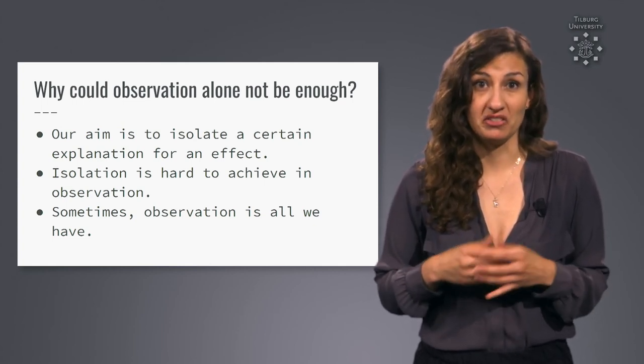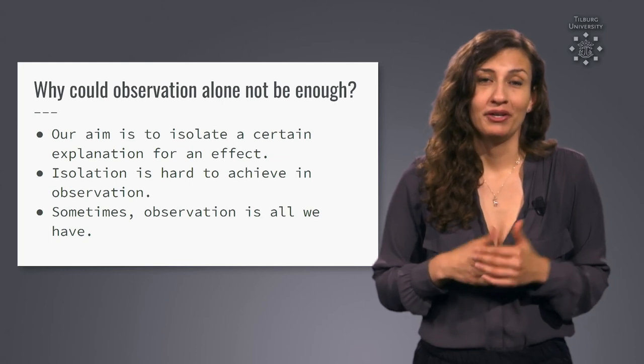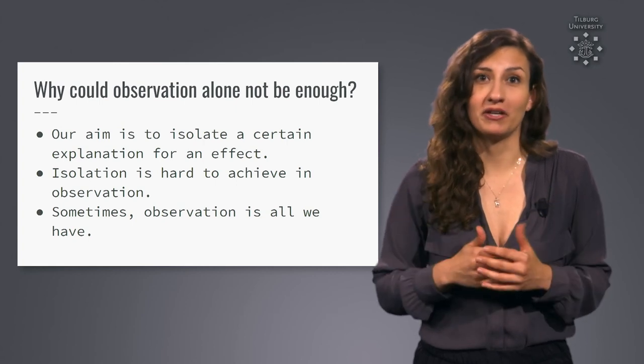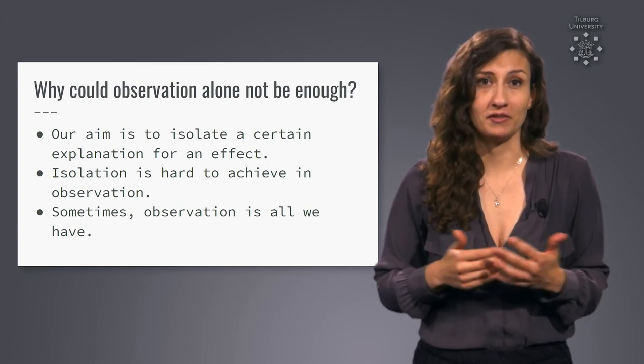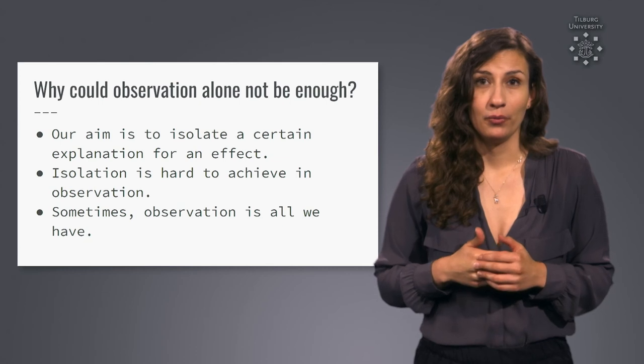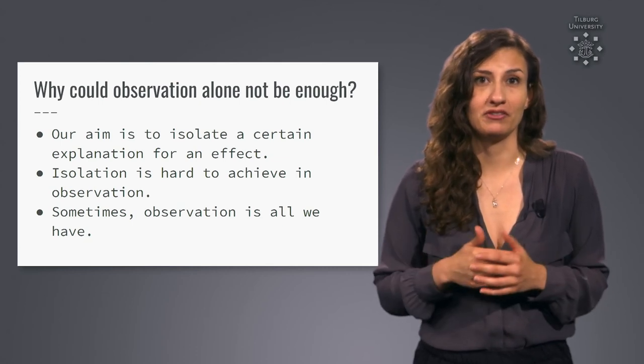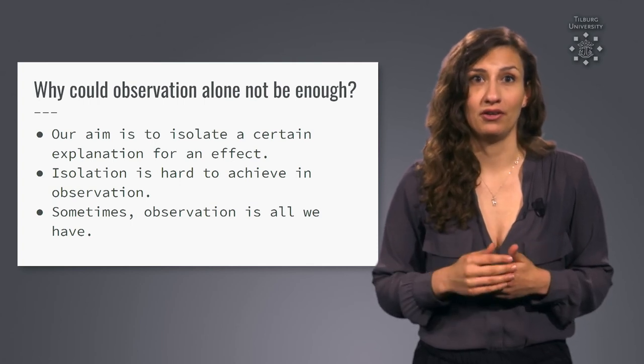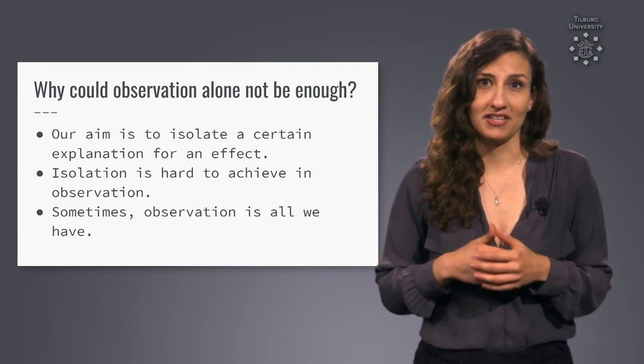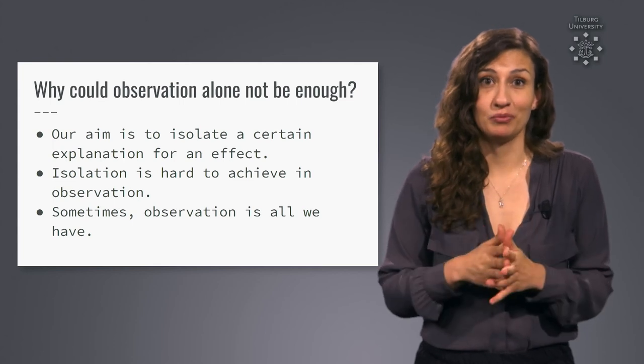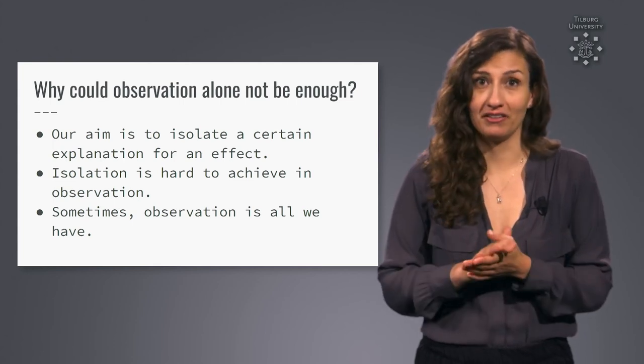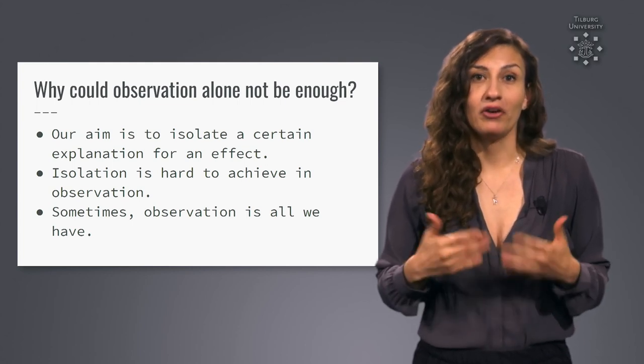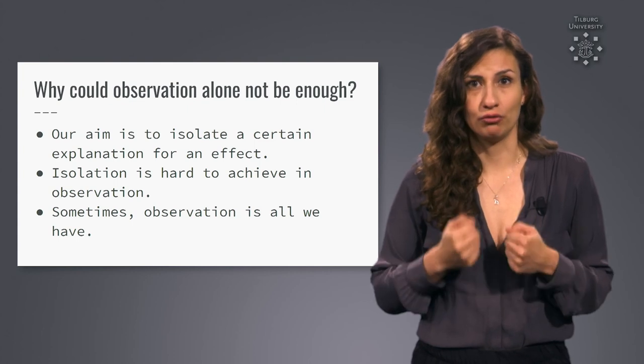Isolating a certain relationship is tricky when you only have observation as a tool though. Why? Because there are hundreds of possibilities for alternative explanations. We would have to record everything about the situation and try to find one that is exactly comparable to another. And just from our little exercise before you can tell that this will be immensely difficult if not sometimes impossible. That's why we often rely on experiments where we have these things under control.